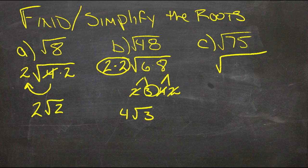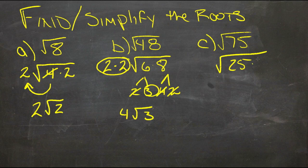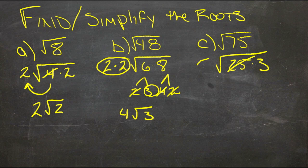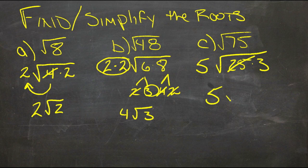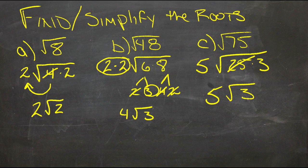And then here, for C, we have 25 times 3. 25 is a perfect square, so we can pull it out. 5 goes outside, we have a 3 left inside. So this third one is the same as 5 roots of 3.